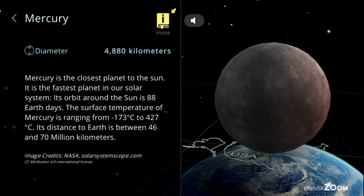Mercury, diameter: 4,880 kilometers. Mercury is the closest planet to the Sun. It is the fastest planet in our solar system. Its orbit around the Sun is 88 Earth days. The surface temperature of Mercury is ranging from minus 173 degrees Celsius to 427 degrees Celsius. Its distance to Earth is between 46 and 70 million kilometers.